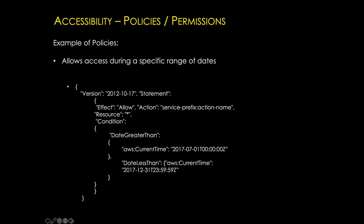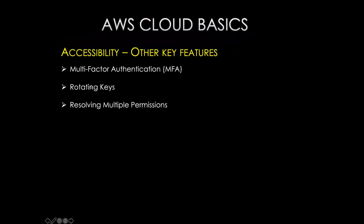Other key features of accessibility include MFA, rotating keys, and resolving multiple permissions. Rotating keys is a key concept — AWS provides KMS, the Key Management System. You use KMS to take a key, flush it, renew it, and put an expiration on it. If you're an architect, you should define a policy so your infrastructure always uses KMS with rotating keys — so if a key gets exposed, you're not using the same key for long. MFA is for root users, as discussed. Always enable multi-factor authentication on your root user to stay secure.